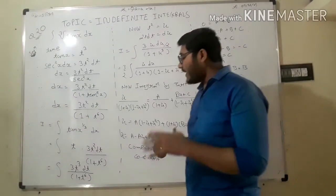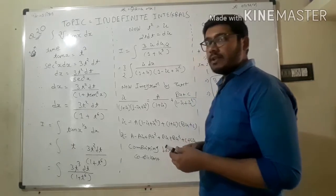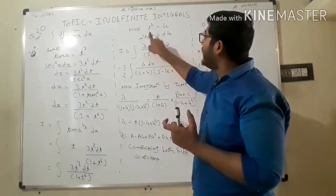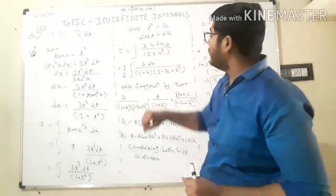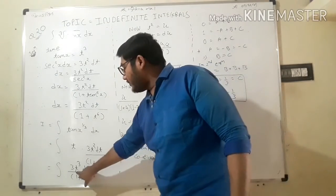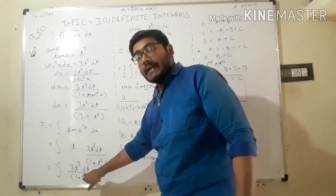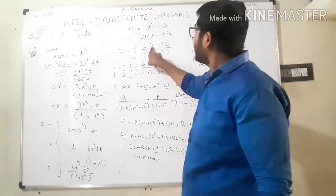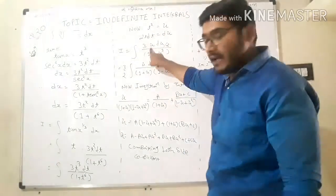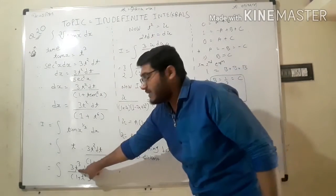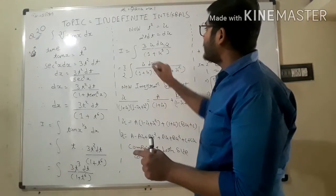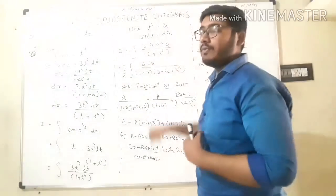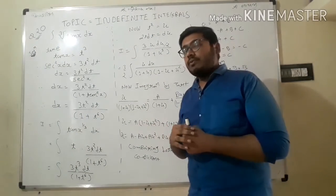Now the situation is very critical. We take a second substitution: t² equal to u. So 2t dt equals du. We rewrite 3t times t² dt: t² becomes u and t dt becomes du/2.